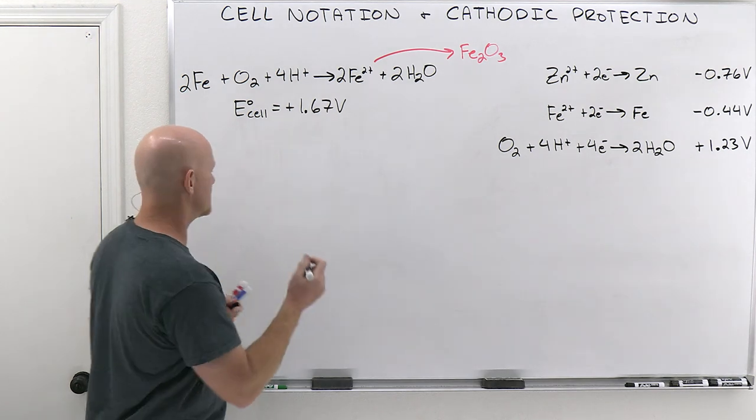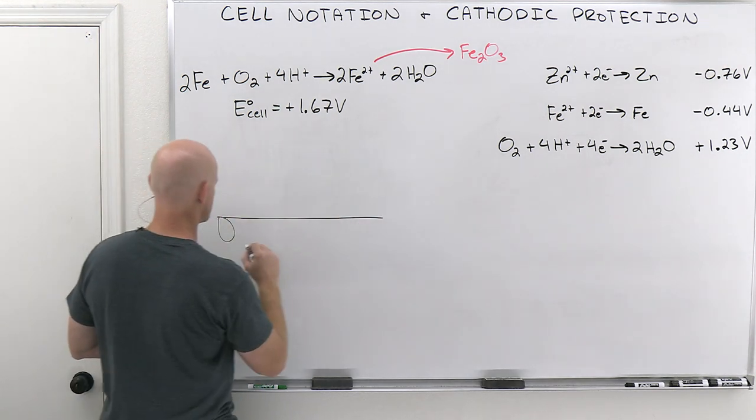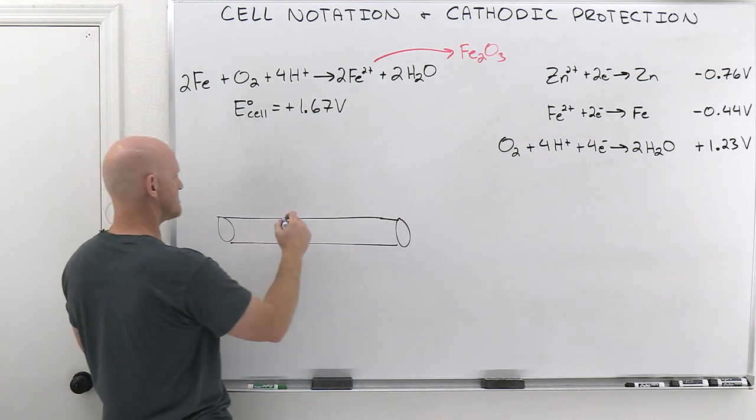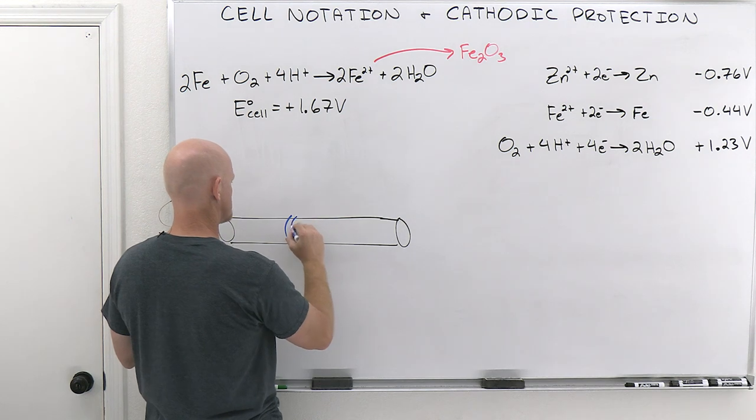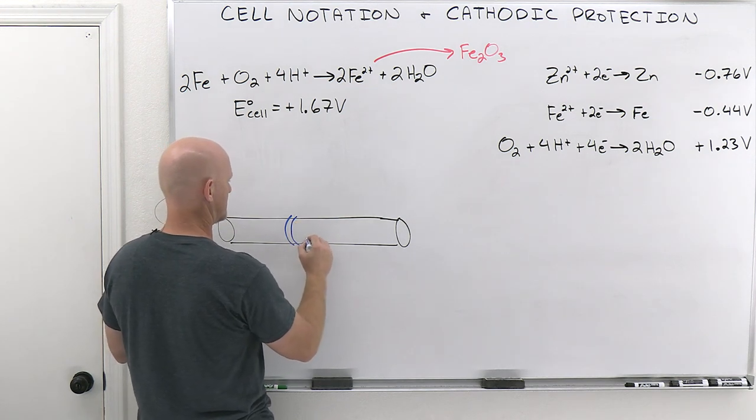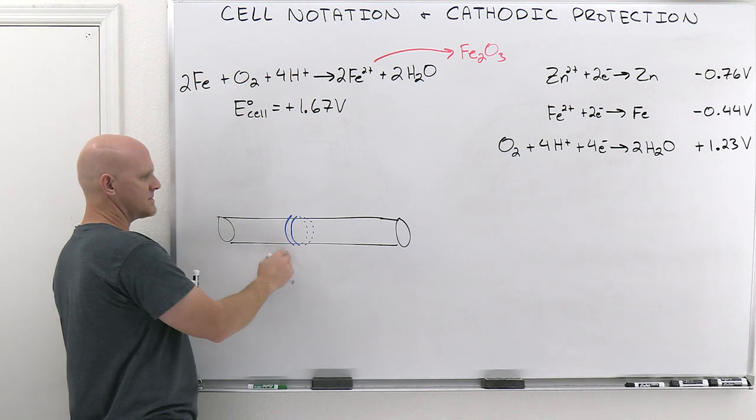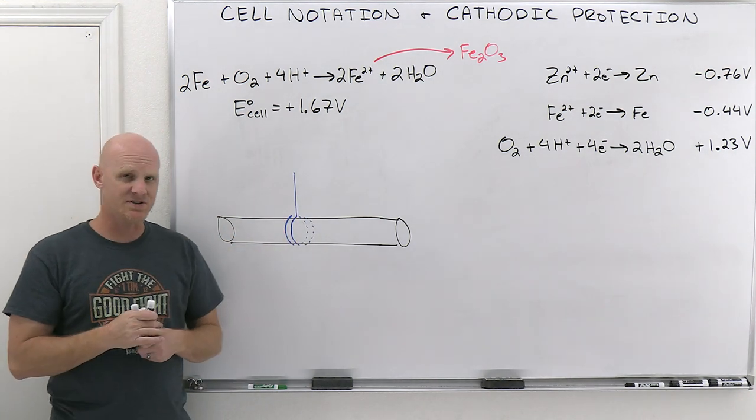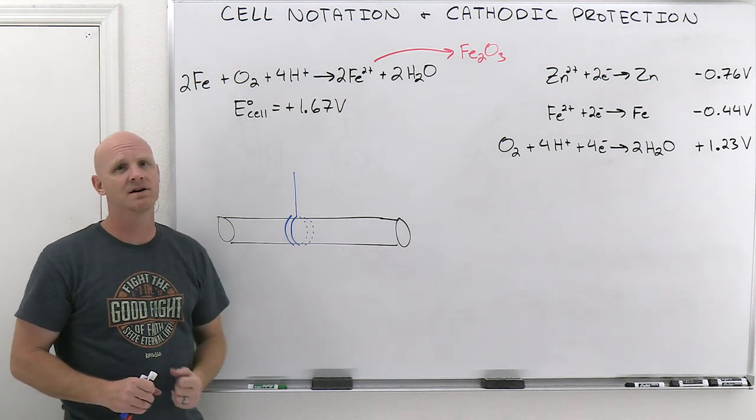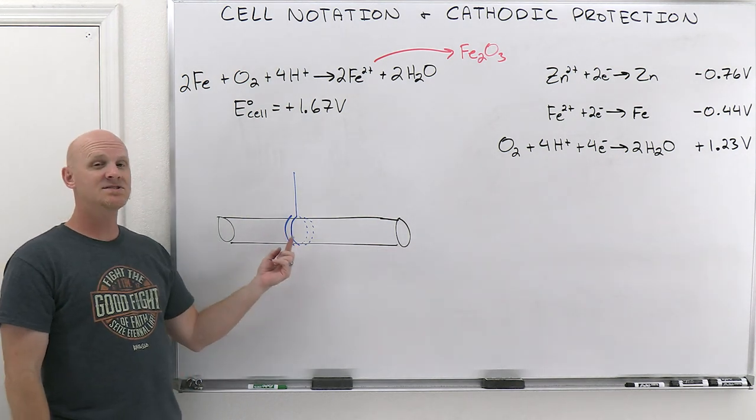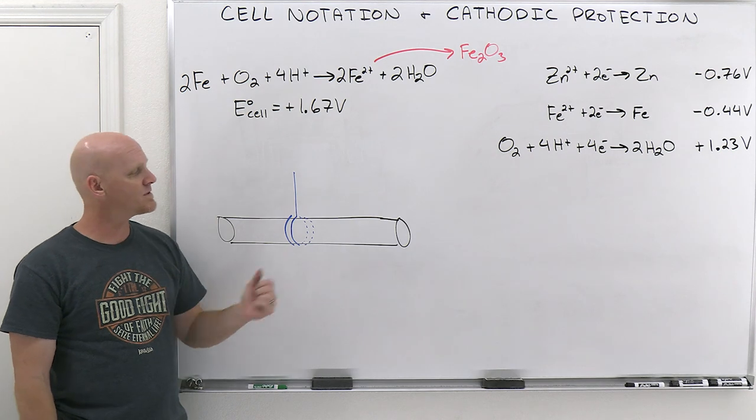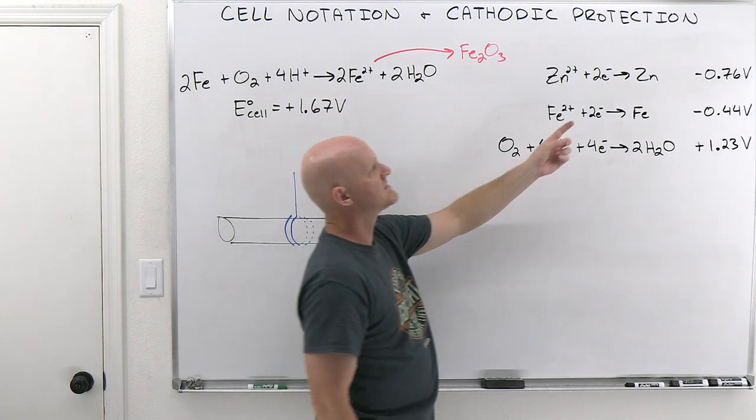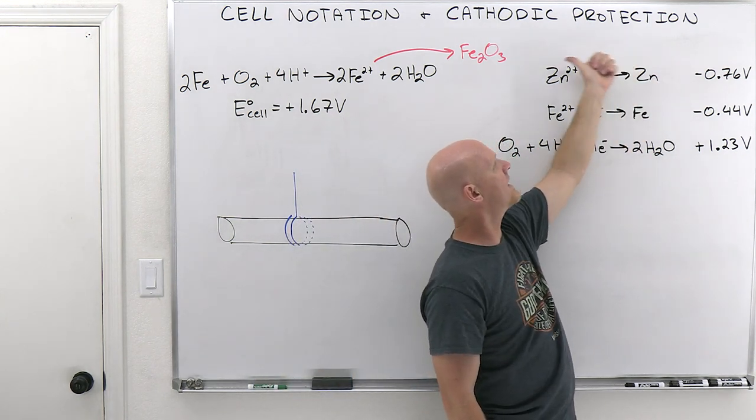So what they often do with these lovely pipes here, we'll take a section of pipe here, so if it's a buried pipe, what they'll do is they'll take a piece of zinc metal. So I'll have a piece of zinc metal every once in a while, and then kind of have it going up to the surface, and they'll just put these every so many feet along the pipe and stuff like this, and this zinc metal is ultimately going to prevent the iron in the steel here from getting oxidized, because if you look here, zinc is more easily oxidized than iron is.